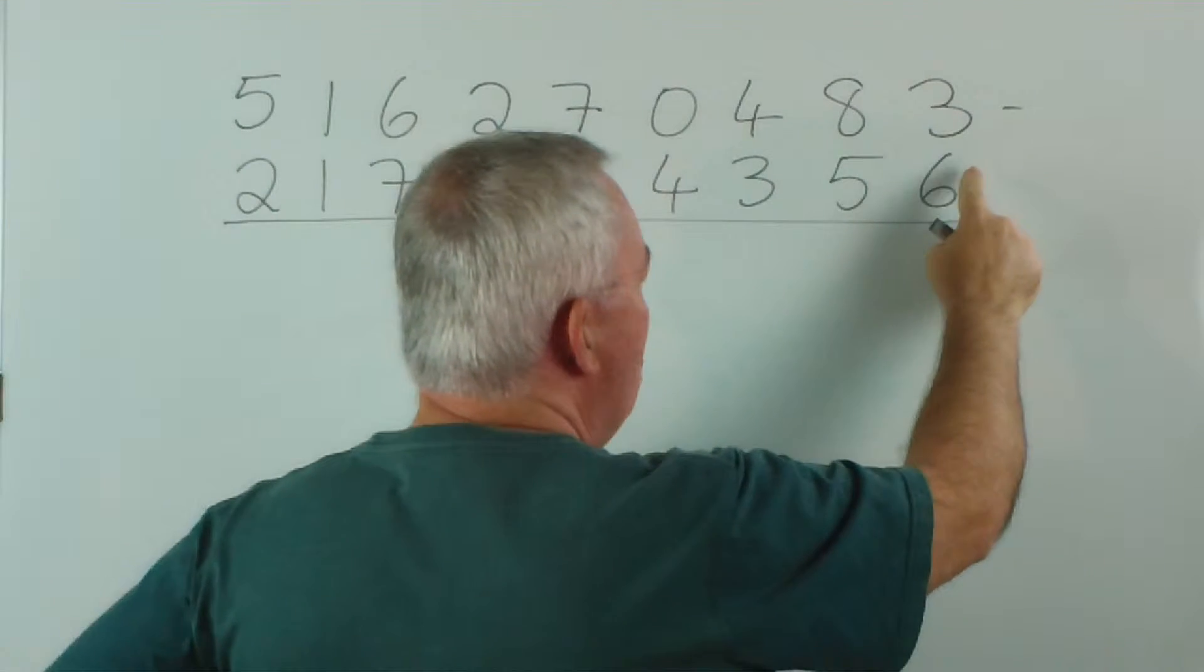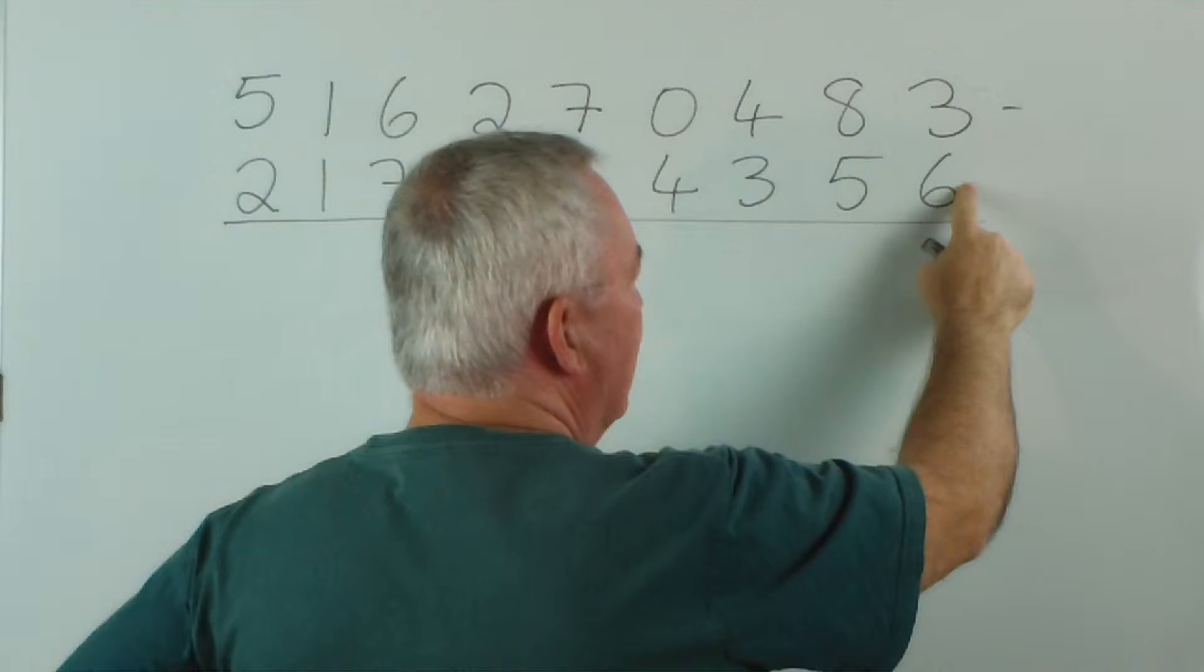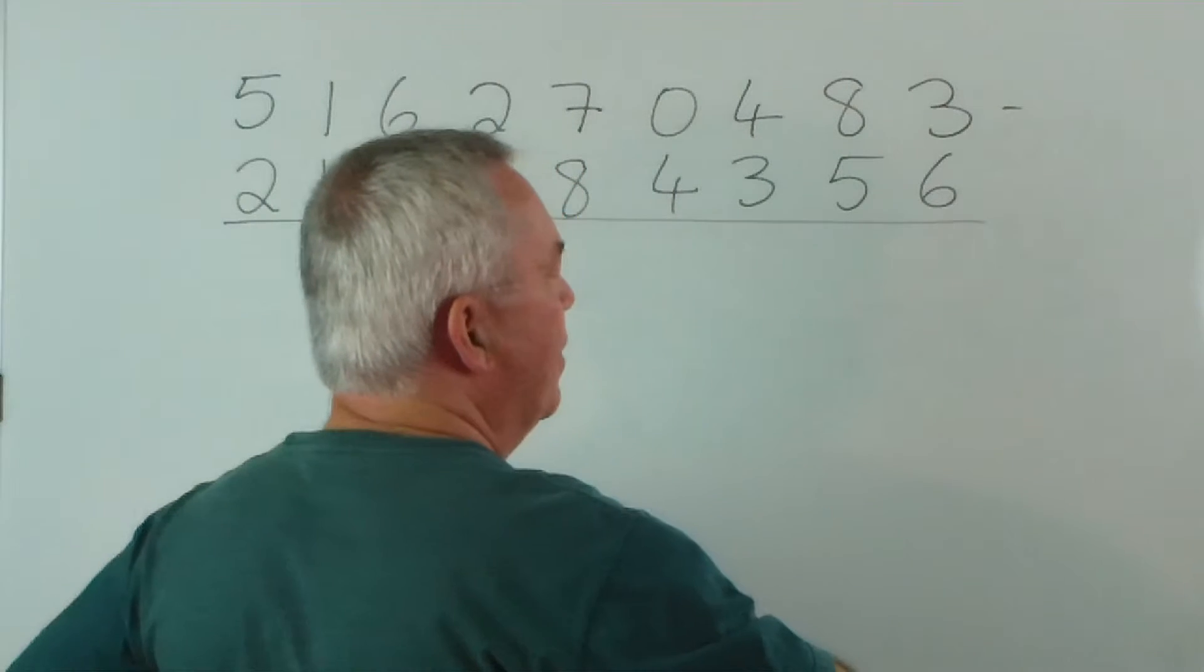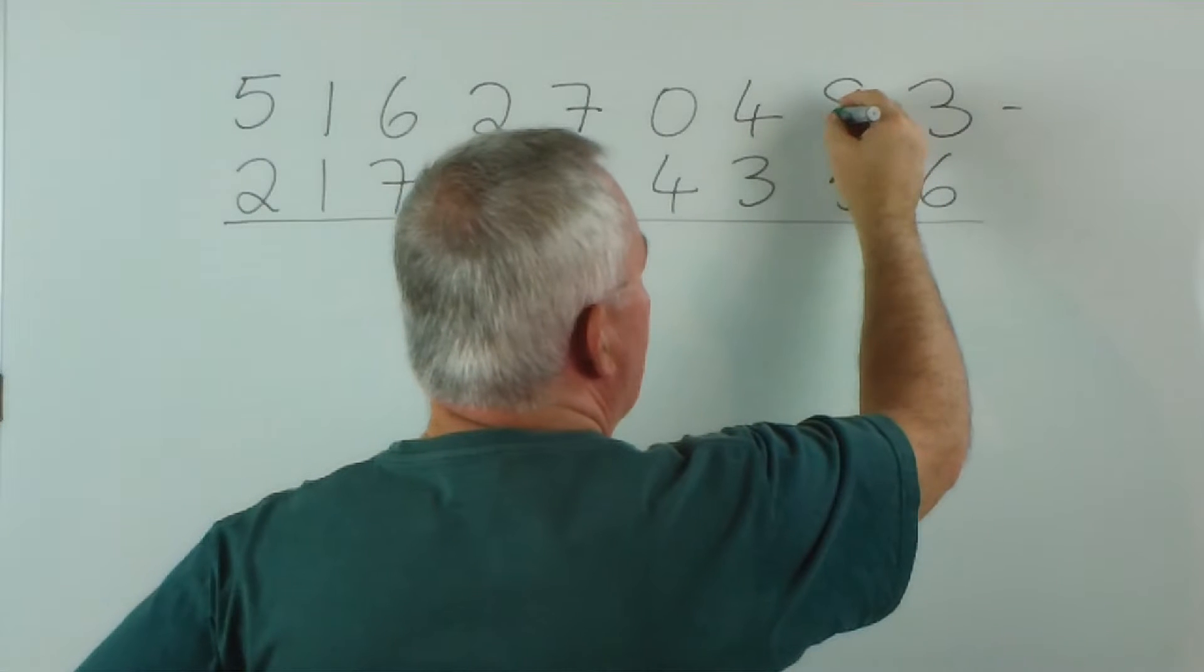If there's a number bigger on the bottom than on the top, the number next to it is reduced by 1.